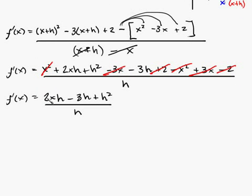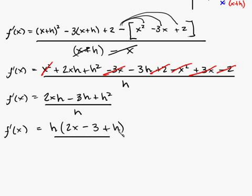Now, go ahead and factor out the h off the top. So f prime of x is equal to 2x minus 3 plus h all over h. So my h's cancel out. Now, as h approaches 0, it becomes 0. So I have 2x minus 3, and so my derivative is equal to 2x minus 3.